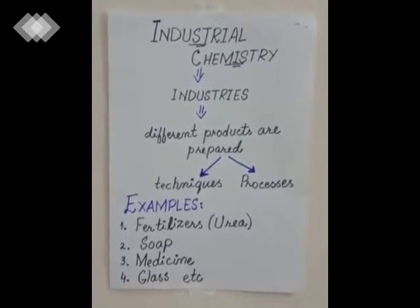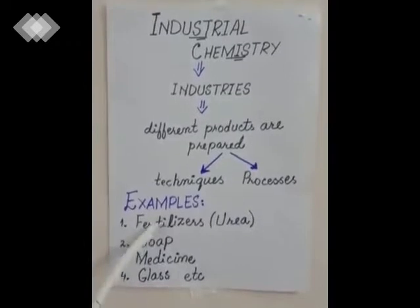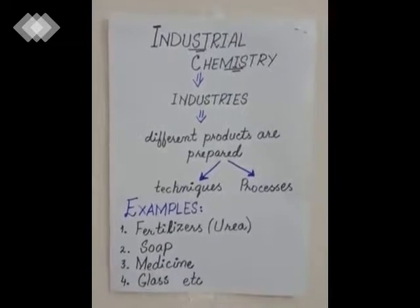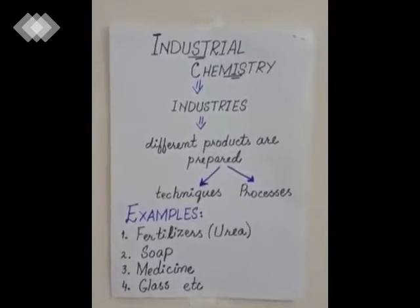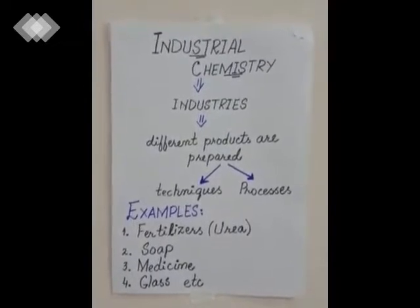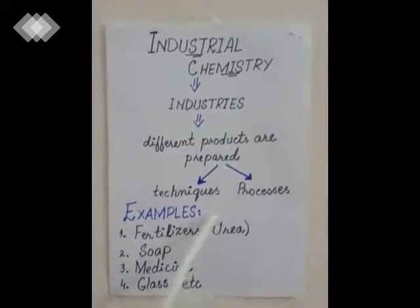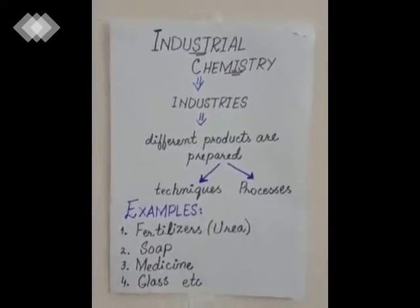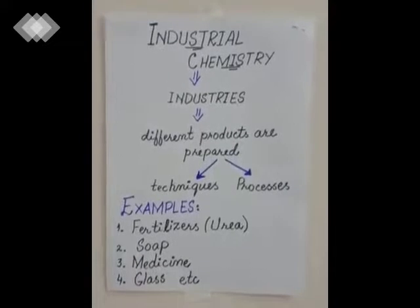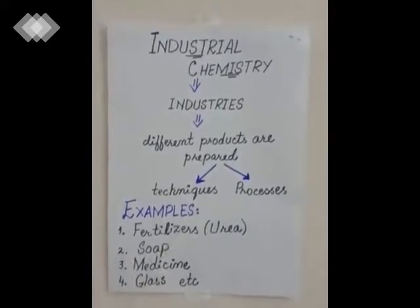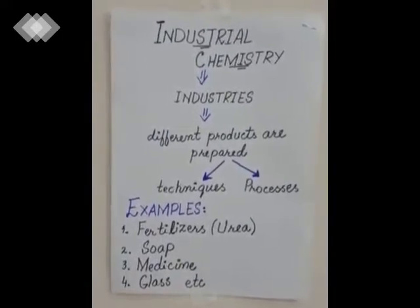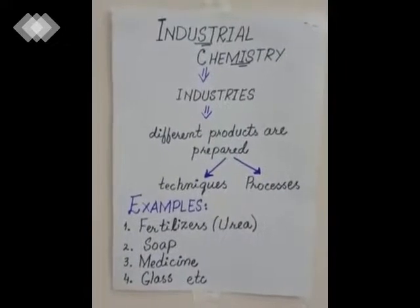I can explain it through a simple example. The first one is fertilizers. Fertilizers are used to increase the production of crops. In the past, farmers used animal manure, but nowadays a chemical fertilizer called urea is used. Urea passes through different techniques and processes before it comes to us, so that is an industrial product and its study is called industrial chemistry.